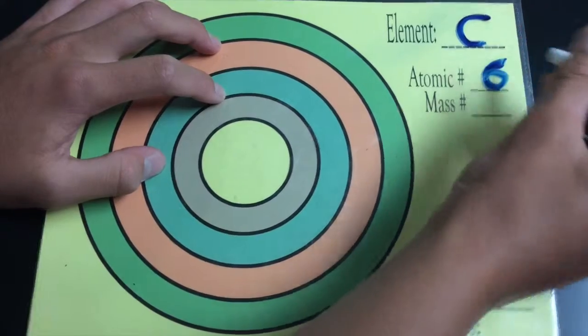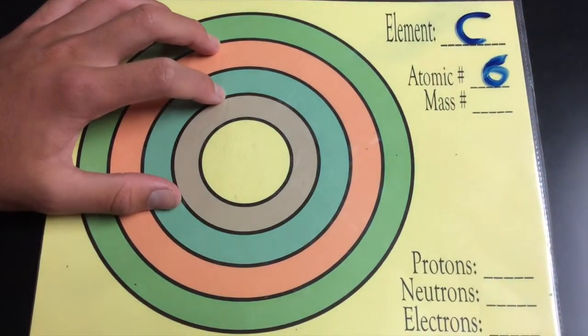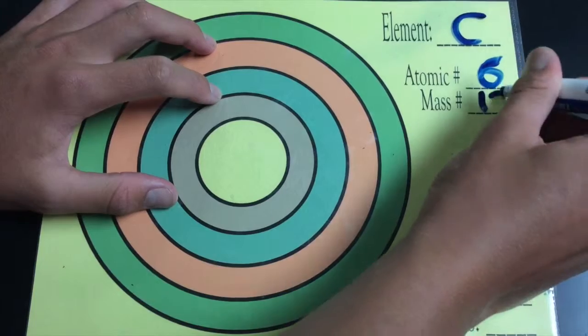Let's start with the model of carbon-12, which has six electrons, six neutrons, and six protons.